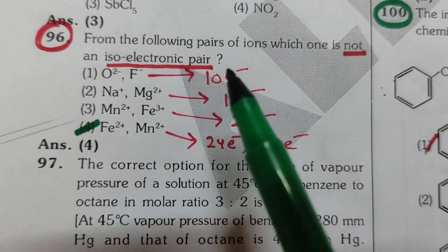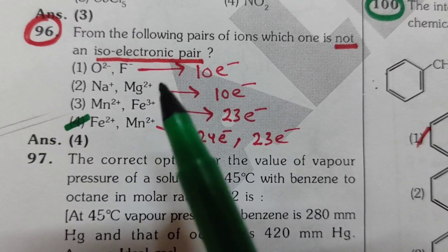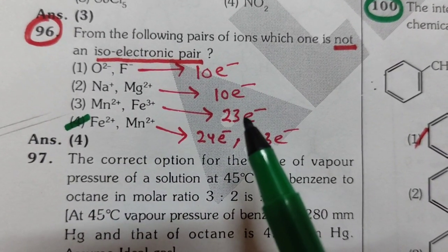O2 minus and F minus both have 10 electrons, so it is correct. Na plus and Mg 2 plus also have 10 electrons, also correct. Third one: 23 electrons, also correct.